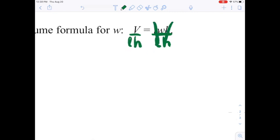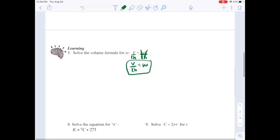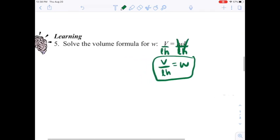This makes the l and the h disappear, leaving us with a w. And it makes this side equal to v over l h. And once I get w alone, we're done. It said solve for w, and my w is alone now. So problem over.